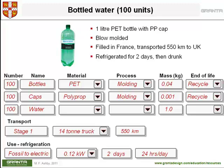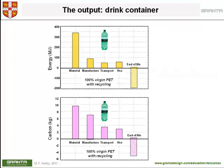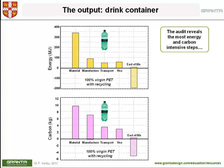If we now press the report button, the system delivers a report of which this is part. The upper picture shows the energy across life. The lower picture shows the carbon emission. The columns, reading from left to right, are for material, manufacture, transport, use, and the potential credit at end of life if the bottle is recycled. The audit reveals the most energy and carbon intensive steps. Here it's quite clearly the material itself that accounts for over half of the total energy and the largest contribution to the total carbon emissions.